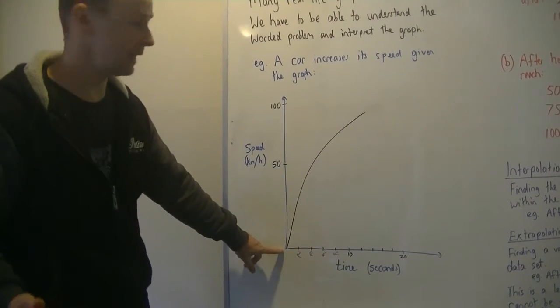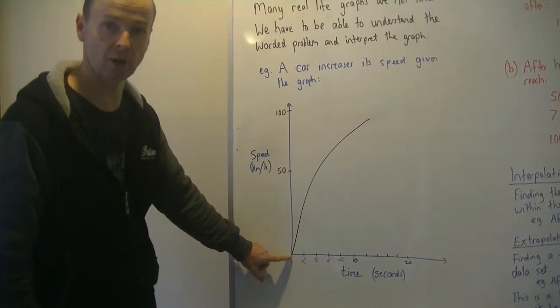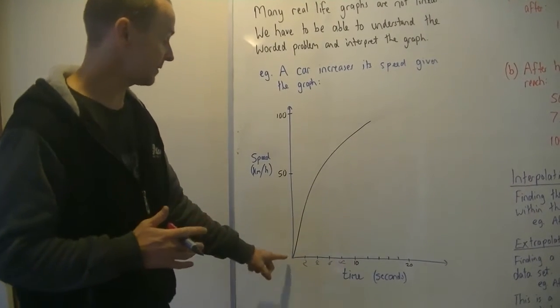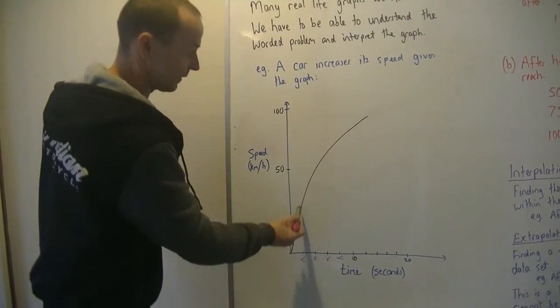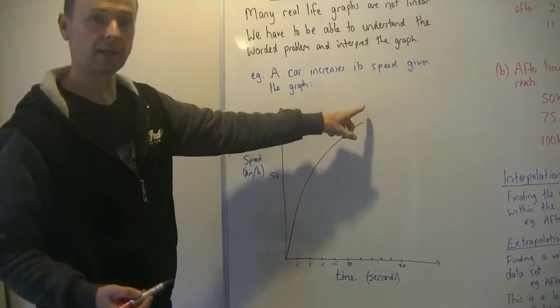So when the time is zero, that's when the car first starts, what is the speed at that time? You can see the speed is zero. So the car is starting off stationary and it's accelerating and its speed is increasing exponentially. So it's going up really fast here and then it's increasing its speed but at a slower rate towards the end.